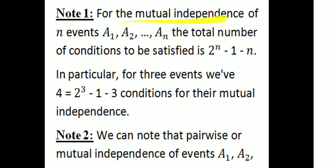For the mutual independence of N events A1, A2, ..., An, the total number of conditions to be satisfied is 2 raised to N minus 1 minus N.